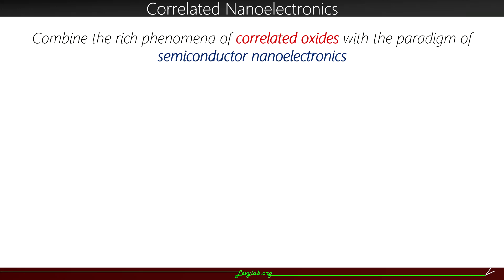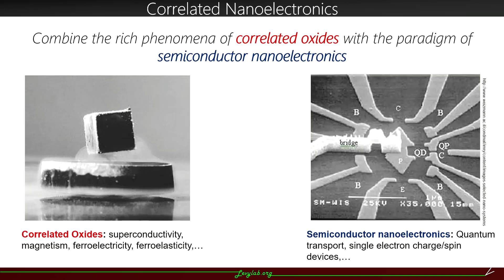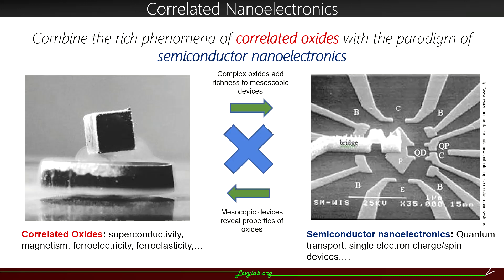So our larger goal in the group is what we term correlated nanoelectronics. Correlated oxides are materials that have intrinsically interesting properties, such as superconductivity and ferroelectricity. Whereas semiconductor nanoelectronics achieve much of their interesting and emergent properties via fabrication of mesoscopic devices in semiconductors. We wish to combine these two paradigms in such a way that correlated oxides can be used to enhance the properties of mesoscopic semiconductor devices. And conversely, fabricating mesoscopic devices out of correlated oxides can be used as a way to understand and reveal properties of the oxides themselves.